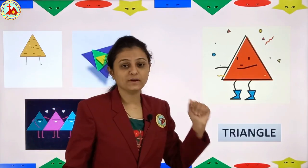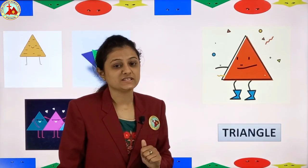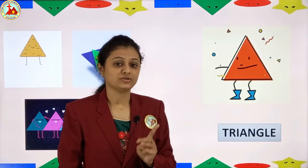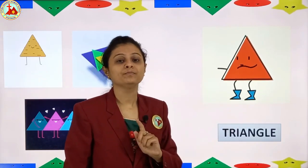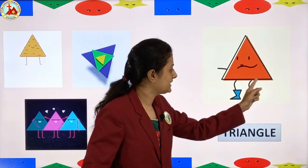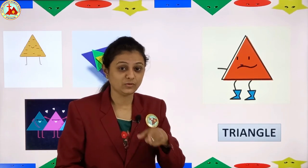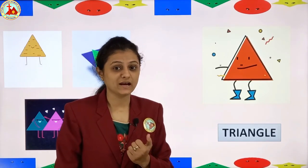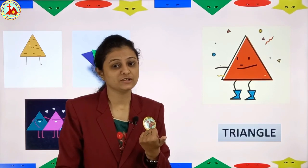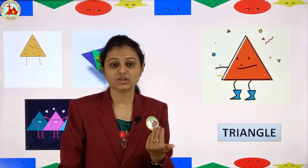Which shape has three sides — one, two and three? Triangle! Three sides means triangle. 'Tri' means three. It also has three corners: one, two and three. Two sides are the same size and the line connecting below makes it a triangle. The yummy pizza when cut into slices becomes triangle shape, and the yummy samosa you eat is also triangle in shape.